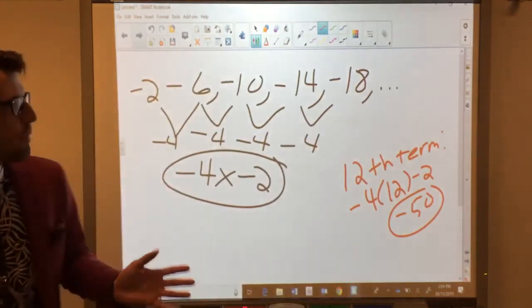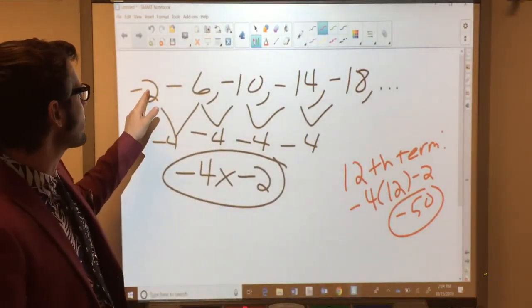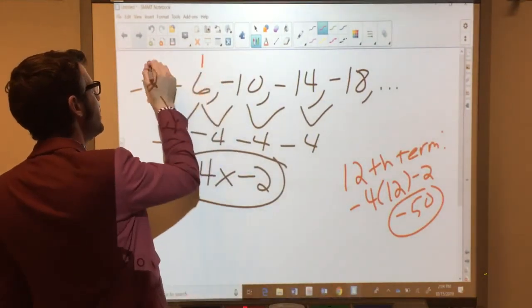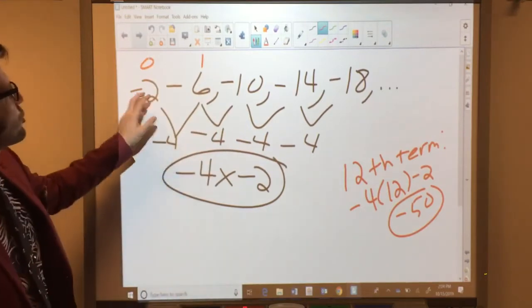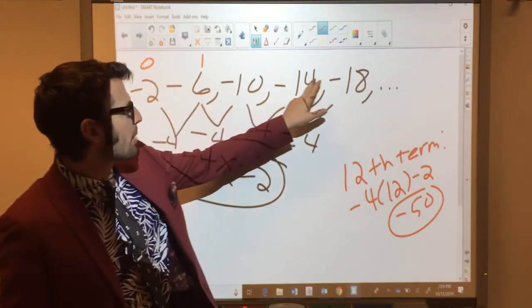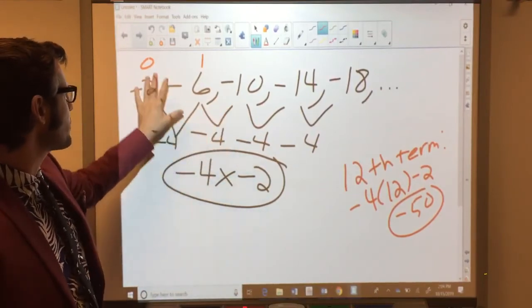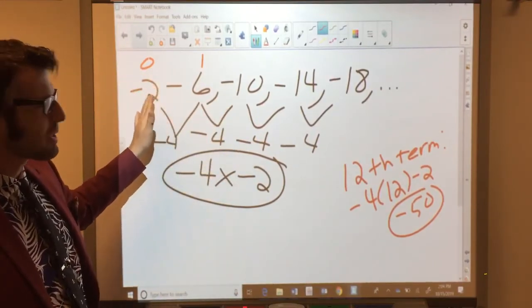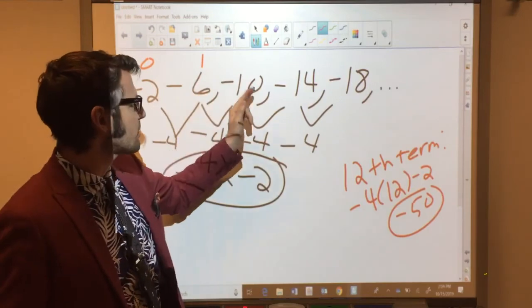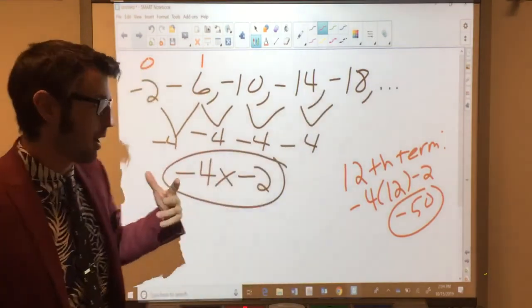The only other piece of advice that I would offer you is to make sure that your initial term that you find, if this was your first term, your initial term should be logical based on what you have here. If you'd put, let's say you said this is going down by 4, so I'm going to put negative 10 here. Well, it doesn't make sense for the pattern to go negative 10, negative 6, negative 10, negative 14, negative 18, at least not in my world.